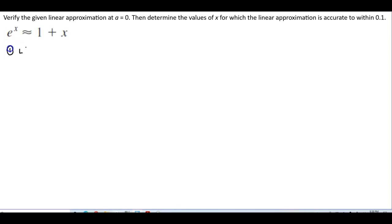So the linear function is going to have the following: it's going to be f of 0 plus f prime of 0 times x minus 0.